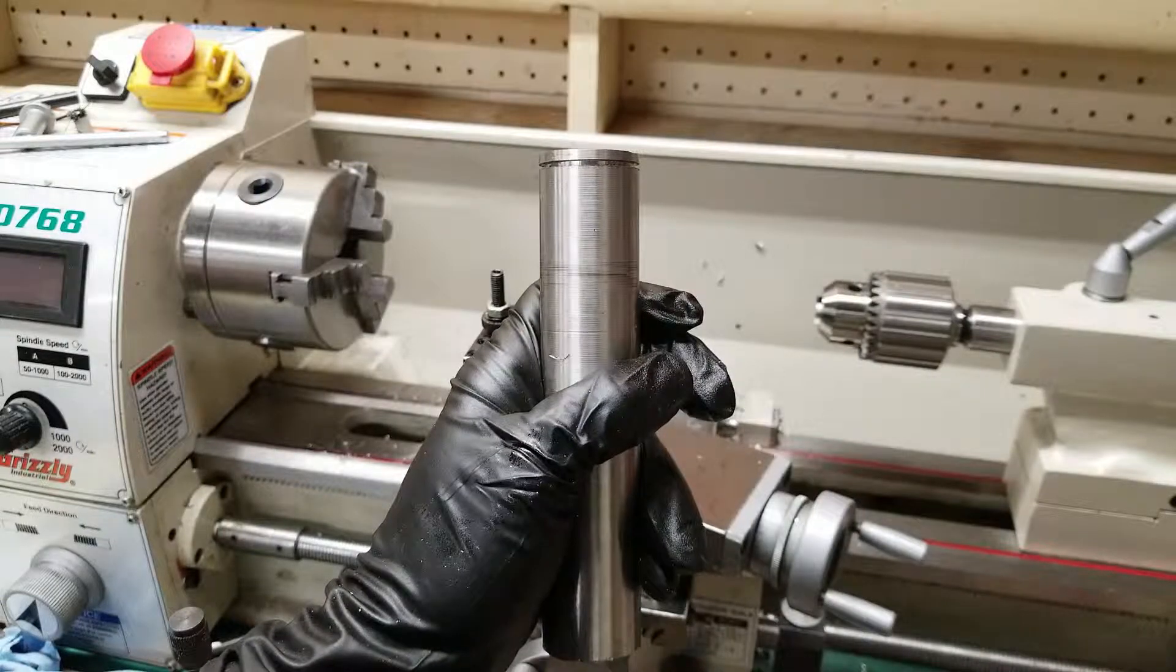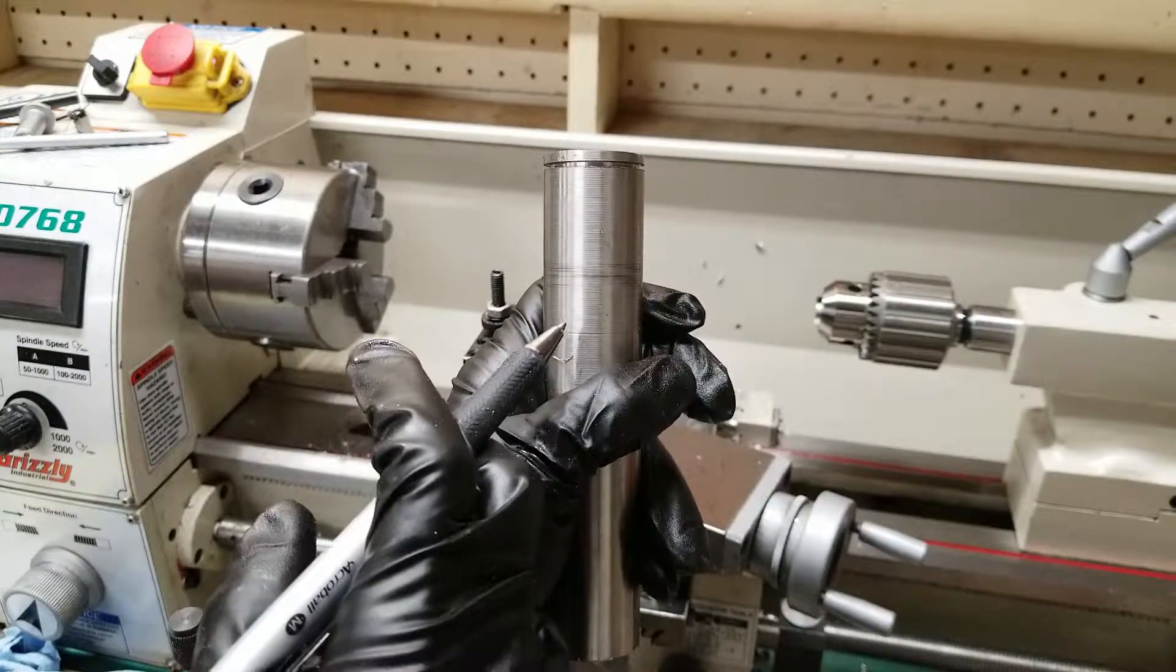In this video, I'm going to see the differences in surface finish both with and without oil when turning stainless steel on the lathe.